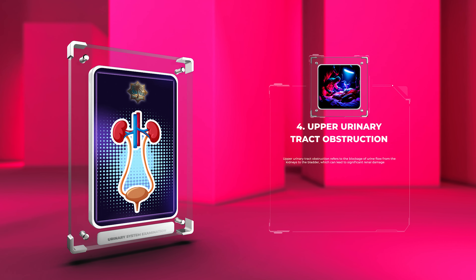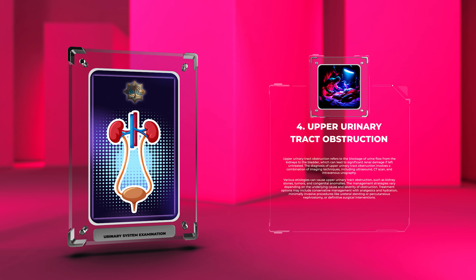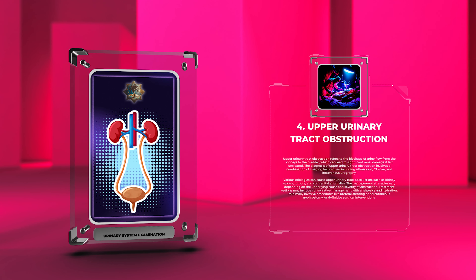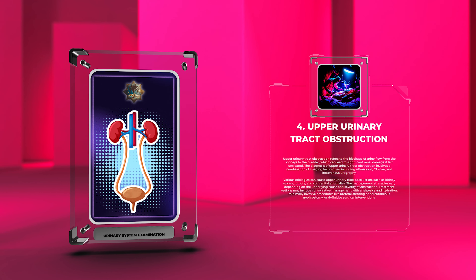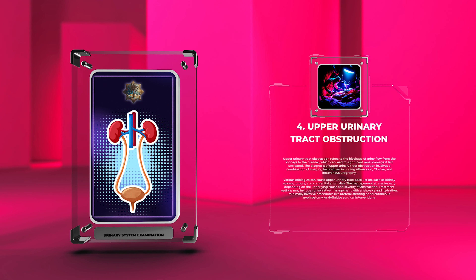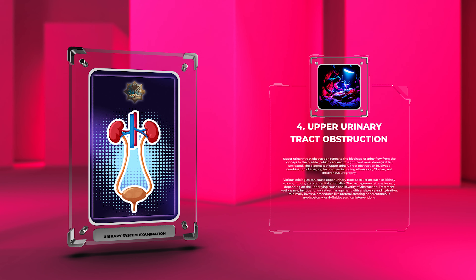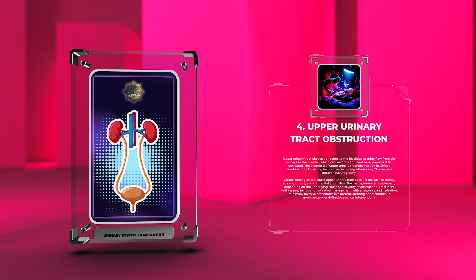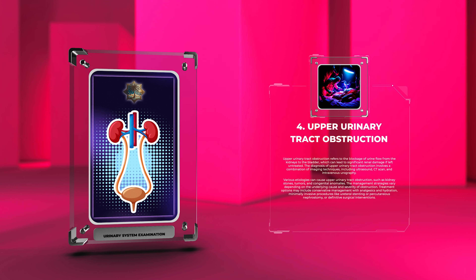Upper urinary tract obstruction refers to the blockage of urine flow from the kidneys to the bladder, which can lead to significant renal damage if left untreated. Diagnosis involves a combination of imaging techniques including ultrasound, CT scan, and intravenous urography. Various etiologies can cause upper urinary tract obstruction, such as kidney stones, tumors, and congenital anomalies.